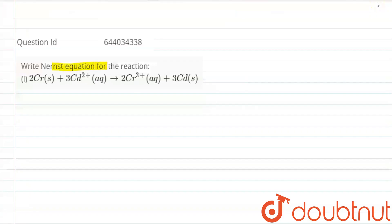The question is: write the Nernst equation for the reaction 2Cr solid plus 3Cd2+ aqueous goes to 2Cr3+ aqueous plus 3Cd solid.